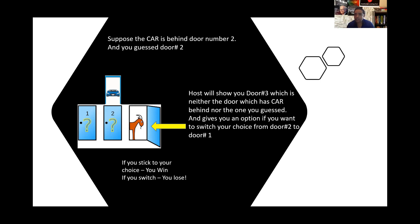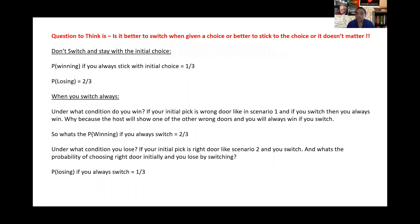The second scenario has the same conditions. The car is behind door number two, but this time you guessed the right door — door number two. The host will show you door number three, which is neither the door with the car nor the one you guessed, and gives you an option to switch from door number two to door number one. This time, if you stick with your choice you win, and if you switch you lose. So the question in terms of probability is: is it better to switch when given a choice, better to stick, or does it not matter at all?